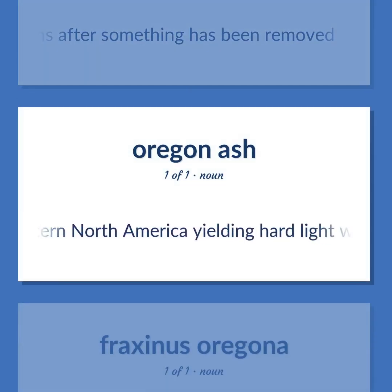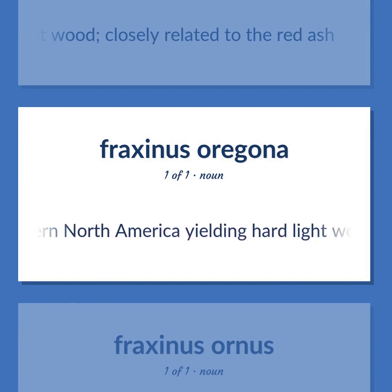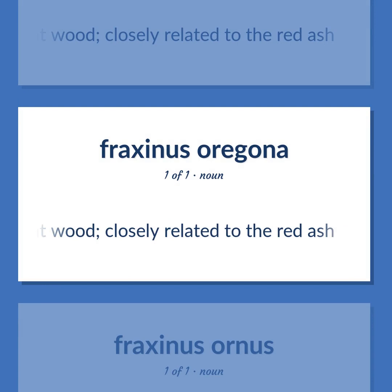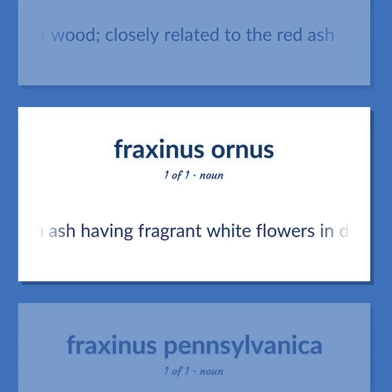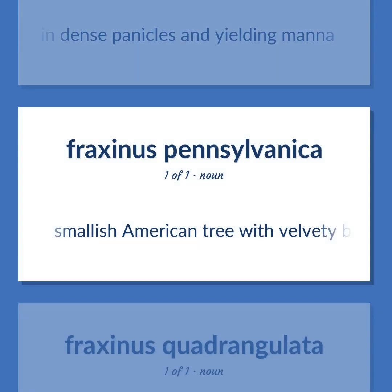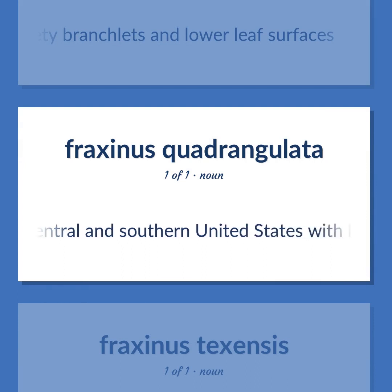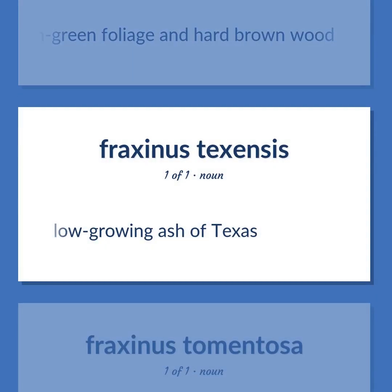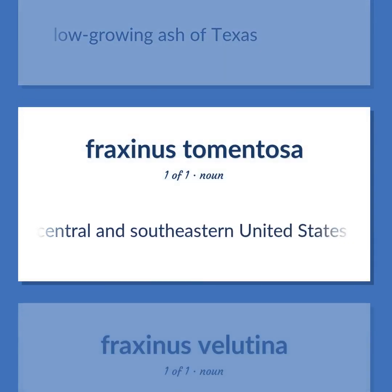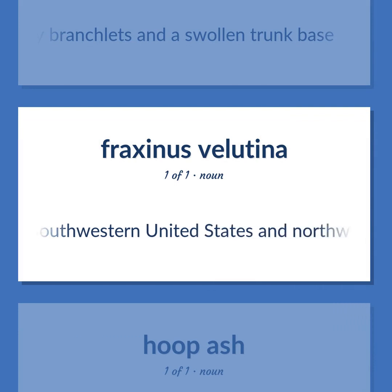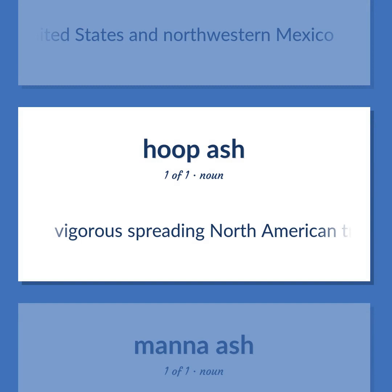Timber tree of western North America yielding hard light wood, closely related to the red ash. Southern Mediterranean ash having fragrant white flowers and dense panicles and yielding manna. Smallish American tree with velvety branchlets and lower leaf surfaces. Ash of central and southern United States with bluish green foliage and hard brown wood. Low-growing ash of Texas. Timber tree of central and southeastern United States having hairy branchlets and a swollen trunk base. Small shrubby ash of southwestern United States and northwestern Mexico. Vigorous spreading North American tree having dark brown heavy wood; leaves turn gold in autumn.